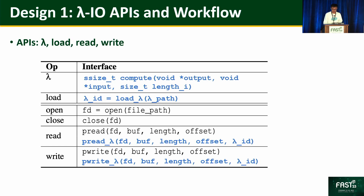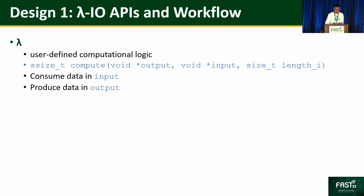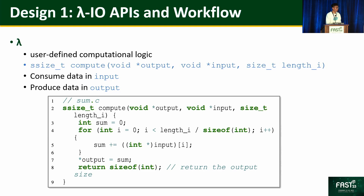We introduce the first design: how Lambda I/O APIs and workflow look. On top of normal I/O APIs — open, close, read, and write — we extend four APIs to enable computation: lambda, load_lambda, pread_lambda, and pwrite_lambda. We focus on two APIs here: lambda and pread_lambda. The Lambda API defines a computational logic to be offloaded, with two important parameters: input and output. An application defines its own logic by filling the function body — it consumes data from the input area and produces data to the output area. As an example to sum integers in a file, it iterates integers in the input area and adds them up.